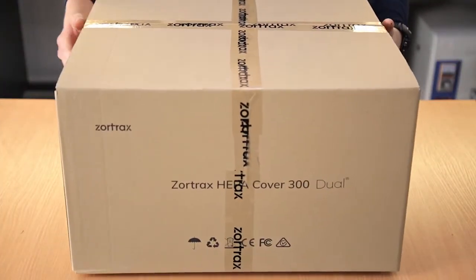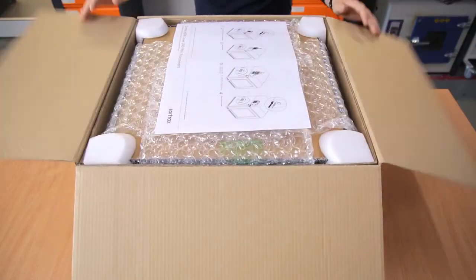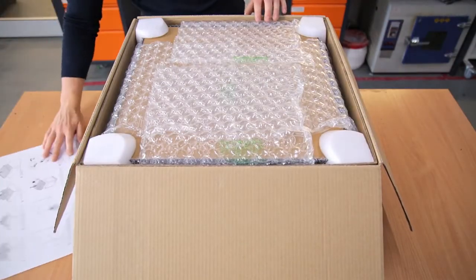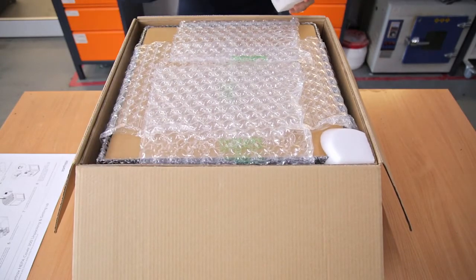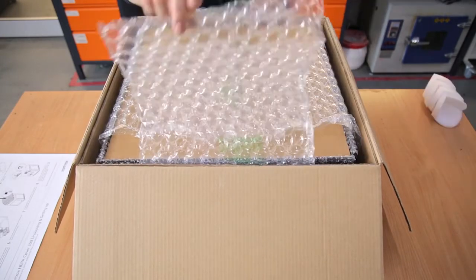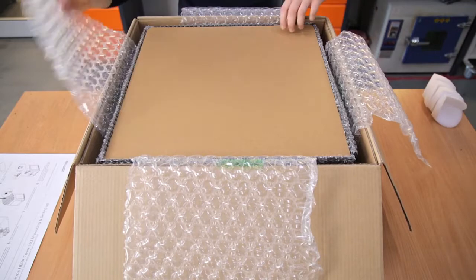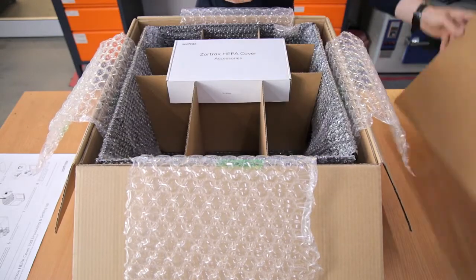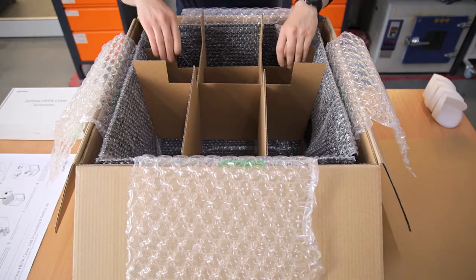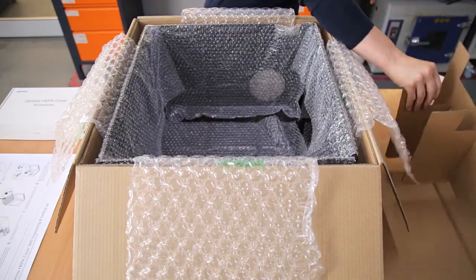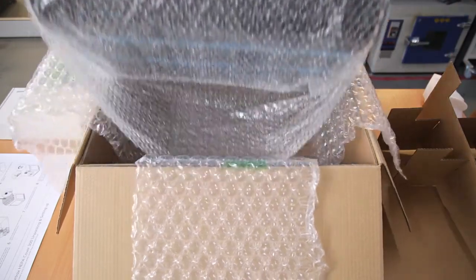You can start by opening the box and removing the guide and protective materials. Remove the box with accessories. The box contains a filter module and a power supply unit. Take out the Zortrax HEPA cover.